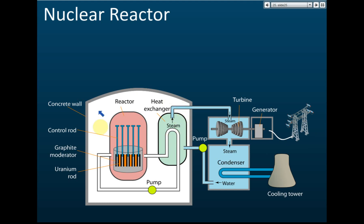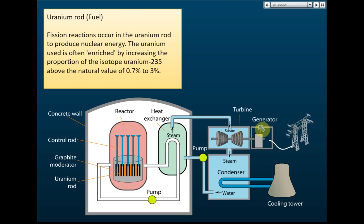In a nuclear plant we have the reactor, the generators, and the cooling tower. Let's look at the reactor first. A very important component is the uranium rod, which acts as the fuel - that is where the energy comes from. The orange-colored rods here are the uranium rods. We bombard them with neutrons and a chain reaction occurs, releasing energy.